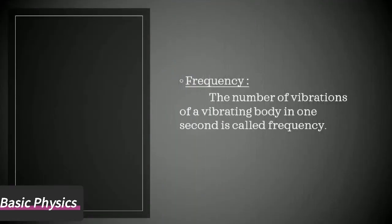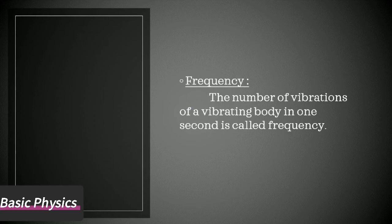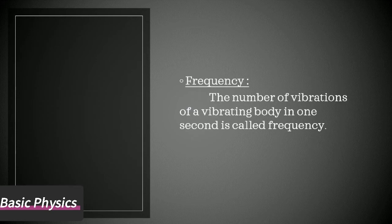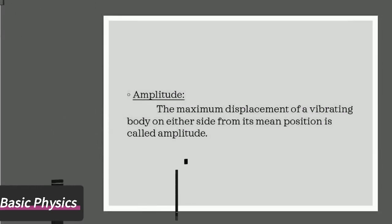Frequency: the number of vibrations of a vibrating body in one second is called frequency. The frequency of alternating current is 50 hertz. Amplitude: the maximum displacement of a vibrating body on either side from its mean position is called amplitude.